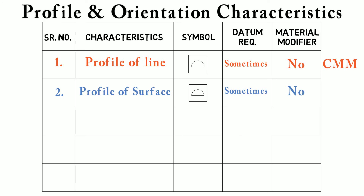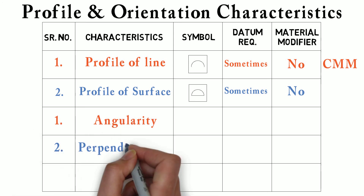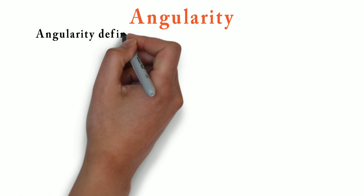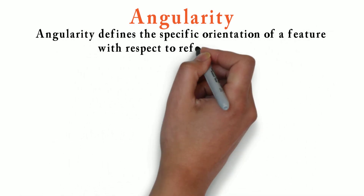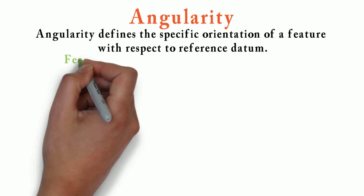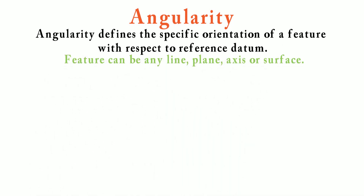Now we will move to our next category, which is orientation tolerance. In orientation tolerance, we have angularity, perpendicularity, and parallelism. First is angularity. Angularity defines the specific orientation of a feature with respect to some reference datum. The feature can be any line, plane, axis, or surface. We show angularity with this symbol.